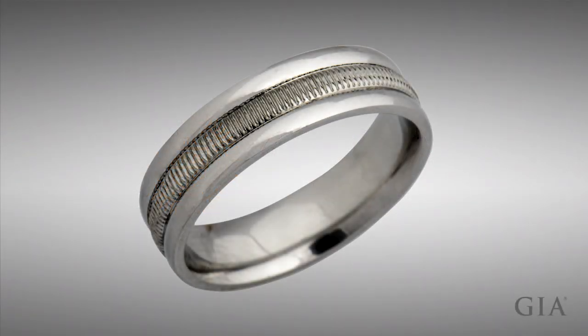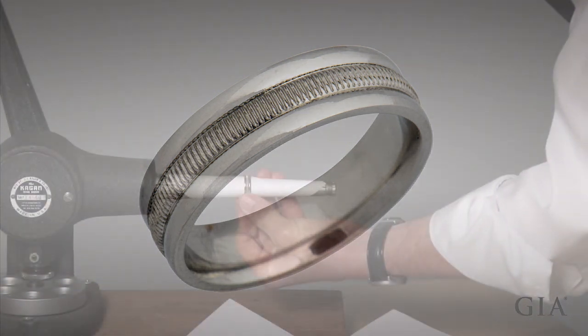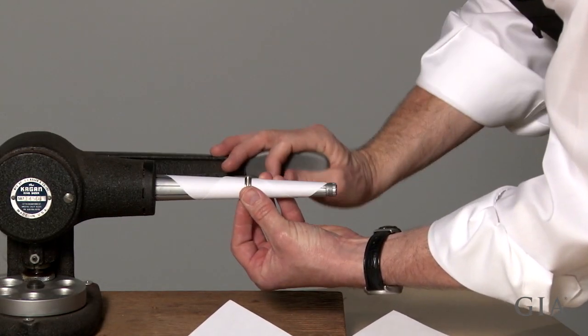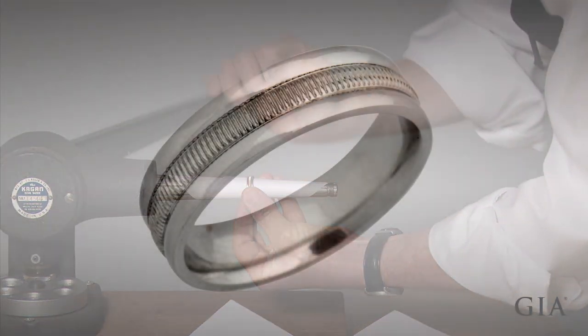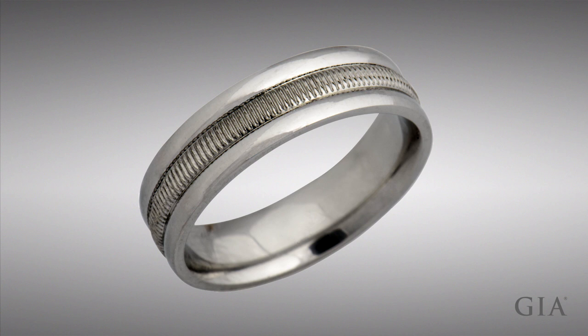This video demonstrates a method for sizing a platinum ruthenium band up from nine and a half to ten using annealing and a ring stretcher. There are no stones set in the ring and the pattern will not be deformed by careful stretching a half size.